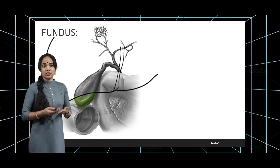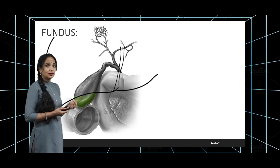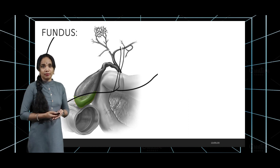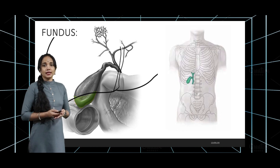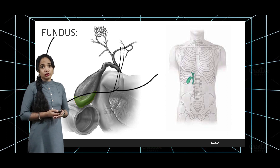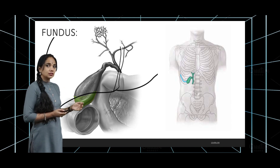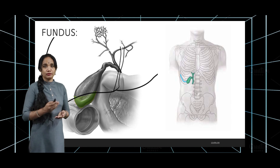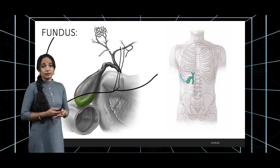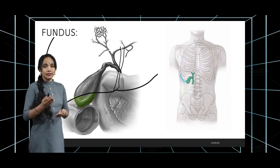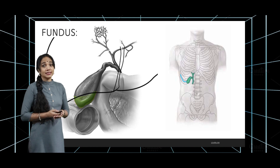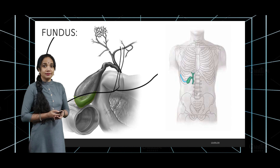The fundus of the gallbladder is that part which projects beyond the inferior border of the liver. The gallbladder fundus is in close association with the tip of the ninth costal cartilage. If you place the ninth costal cartilage over there, the tip of the ninth costal cartilage is where the gallbladder fundus touches.